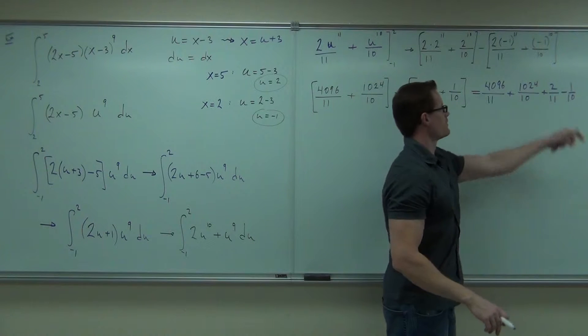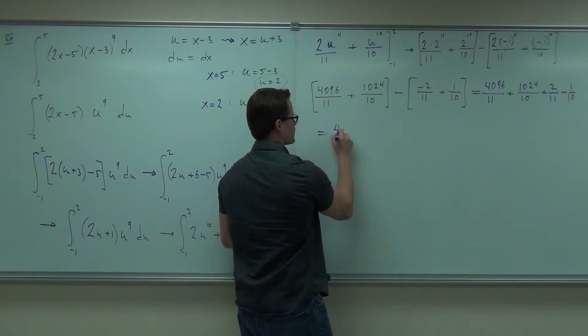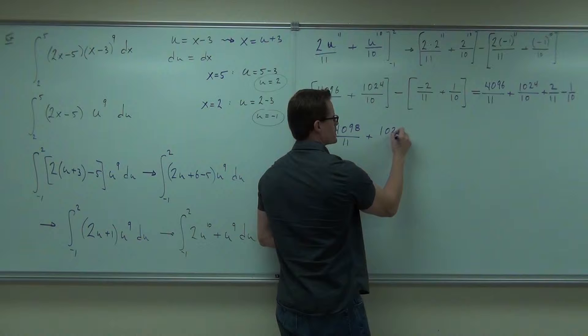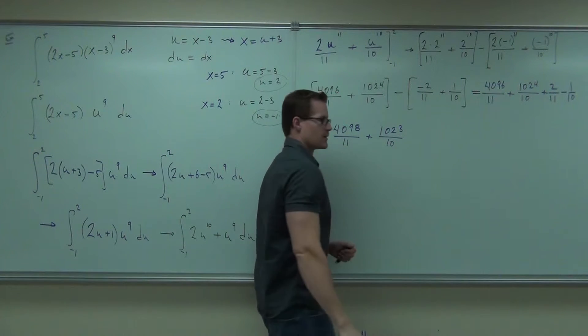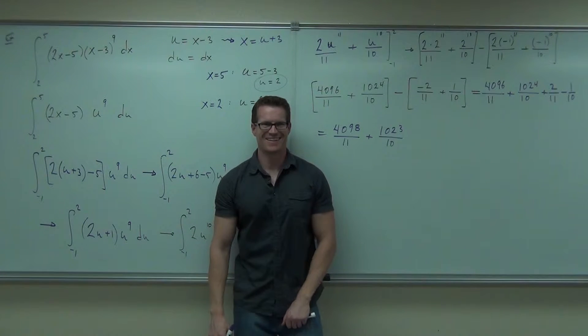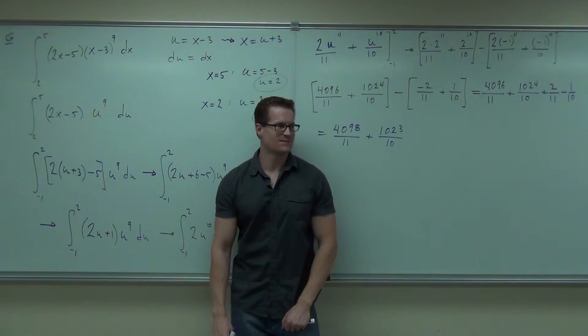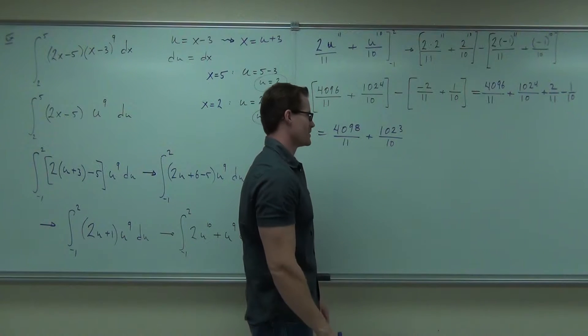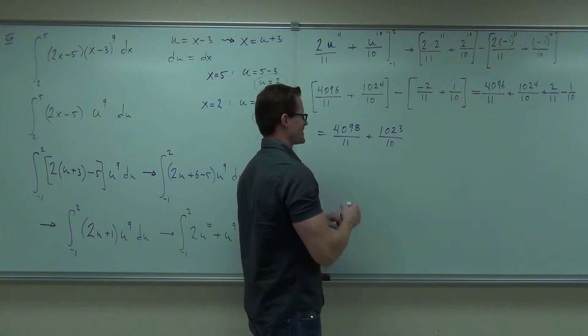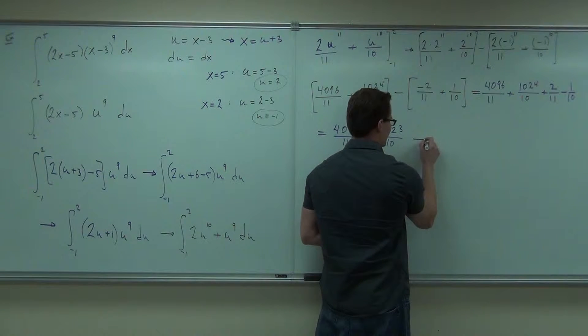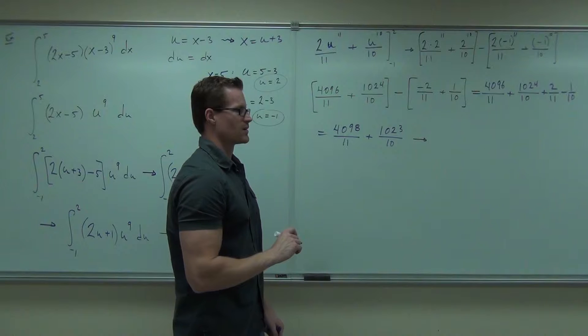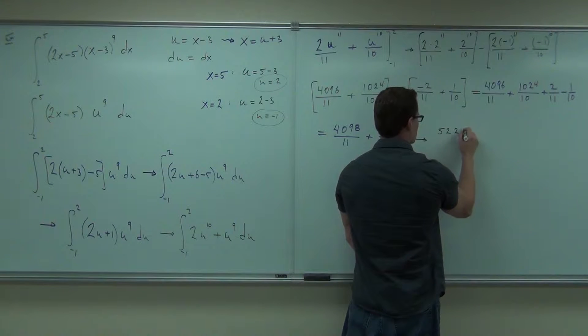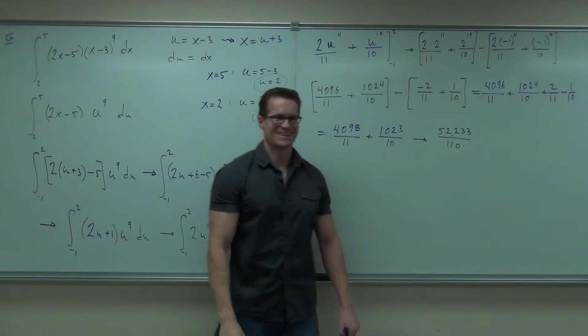We'll combine some like fractions. We've got 11ths and 11ths. That's going to give you 4,098/11ths. That's going to give you 1,023/10ths. And then you're going to find a common denominator. All right, so we're going to find a common denominator, which is? 110. Probably, yeah, 110. I don't want to do that. It's 52,233 over 110. That's the simplified fraction. Yeah, that's it. Awesome.